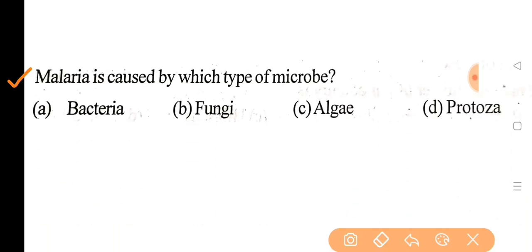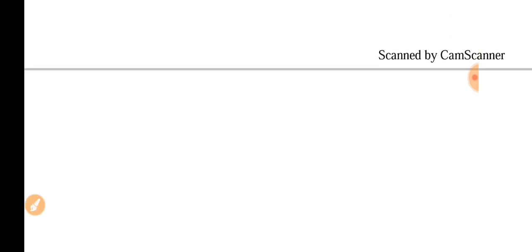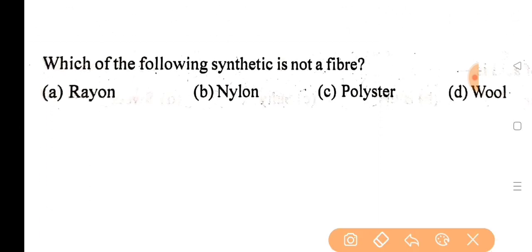Next question: malaria is caused by which type of microbe? Correct answer is option D, protozoa. Next question: which of the following synthetic is not a fiber? Correct answer is option D, wool.